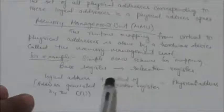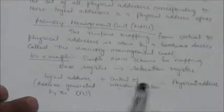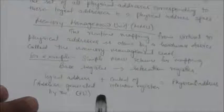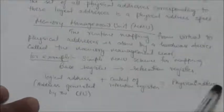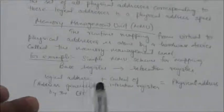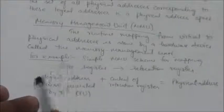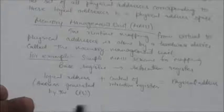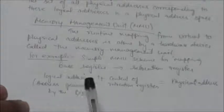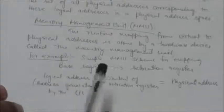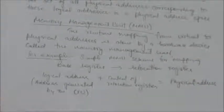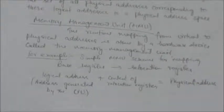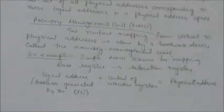After adding the content of the relocation register with the logical address, we get the physical address. This is how this simple Memory Management Unit scheme converts the logical address into a physical address. The Memory Management Unit actually has many methods for converting a logical address into a physical address.